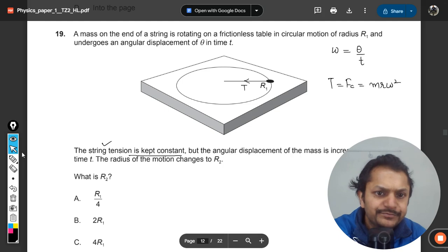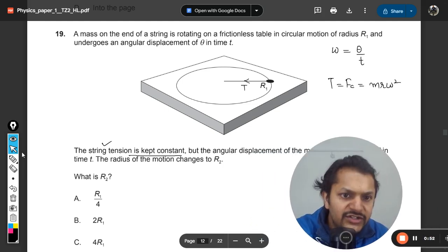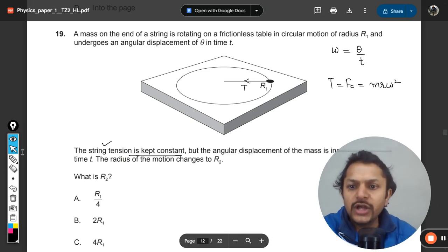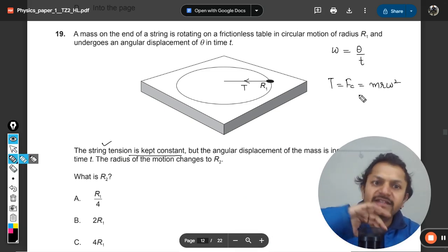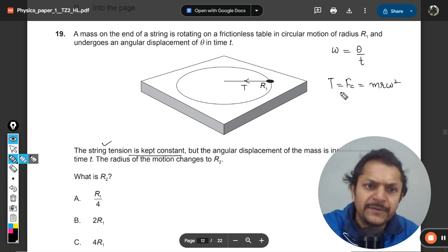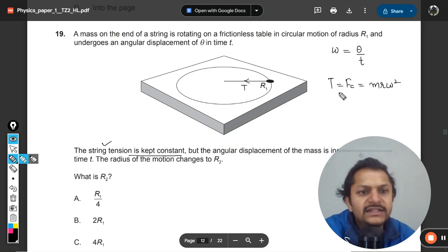But the angular displacement of the mass increased to 2 theta in time t, so now the angular velocity is increased. But the centripetal force or the tension or the centrifugal force is not changing, and omega is increased. It has become double.